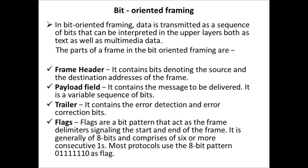The parts of a frame in bit-oriented framing are: frame header, payload fill, trailer, and flags. The first part is the frame header. It contains bits denoting the source and the destination address of the frame. The second part is payload fill. It contains the message to be delivered. It is a variable sequence of bits.